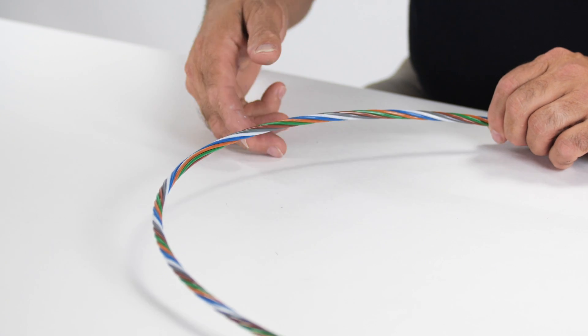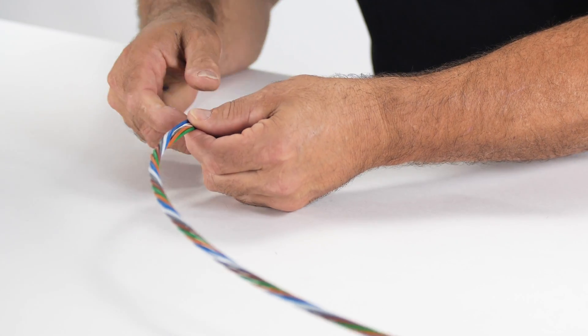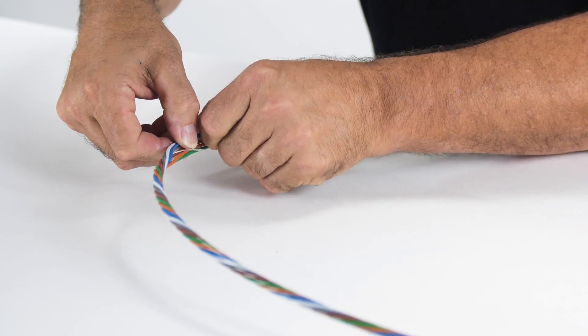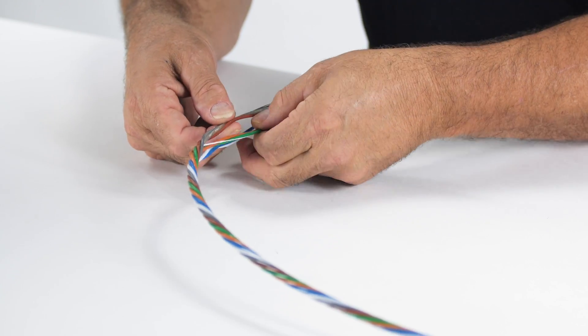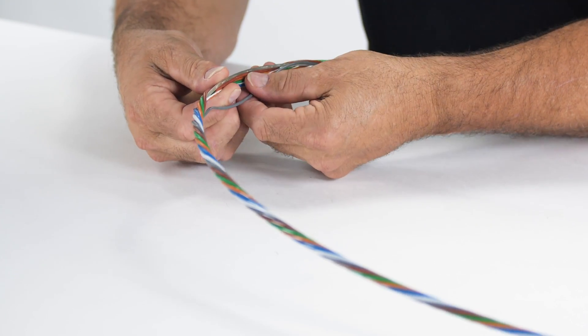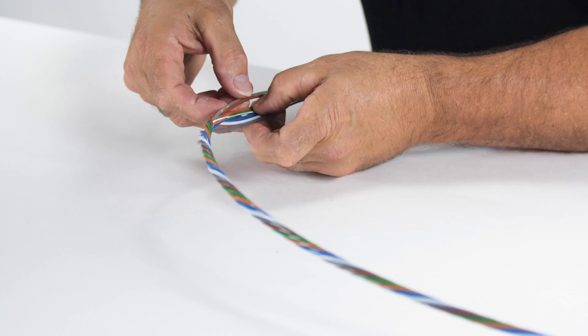Begin this step by locating the reverse oscillation located nearest to the center point of the loop. Note, the reverse oscillation is where the buffer tubes change direction periodically throughout the cable in order to make mid-sheath entry possible.